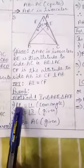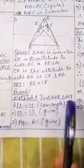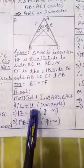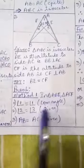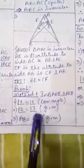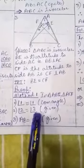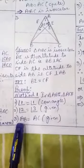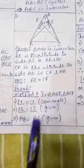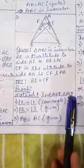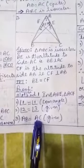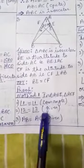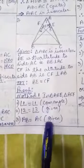Angle A of the first triangle equals angle A of the second triangle — angle A is common to both triangles. Angle 2 of the first triangle equals angle 3 of the second triangle, each equal to 90 degrees, since BE and CF are altitudes. AB of this triangle equals AC of this triangle; AB equal to AC is given because triangle ABC is an isosceles triangle. So we have listed two pairs of equal angles and one pair of equal sides.